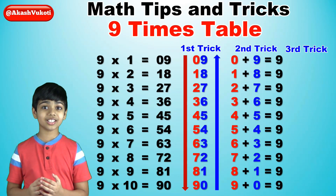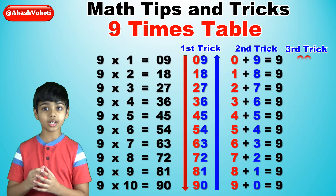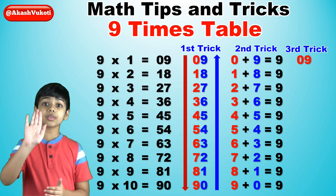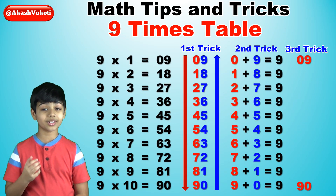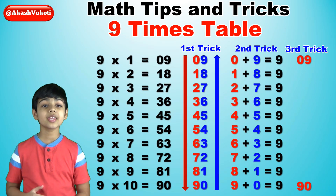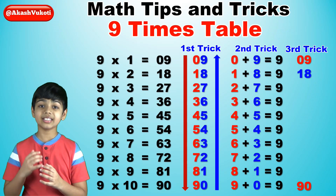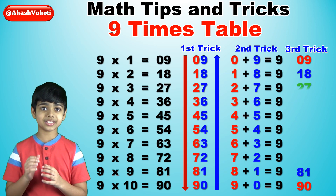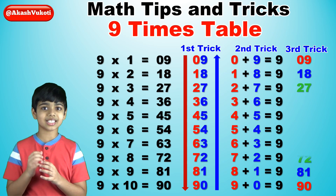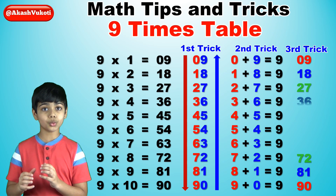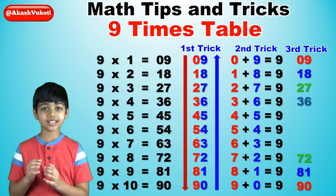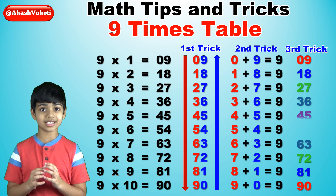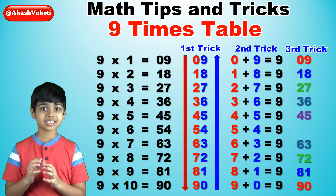The third trick is that 9 times 1 is 9. In the same way, 9 times 2 is 18, and 9 times 9 is 81. 9 times 3 is 27, and 9 times 8 is 72. 9 times 4 is 36, and 9 times 7 is 63. And finally, 9 times 5 is 45, and 9 times 6 is 54. These answers come in reversal pairs.